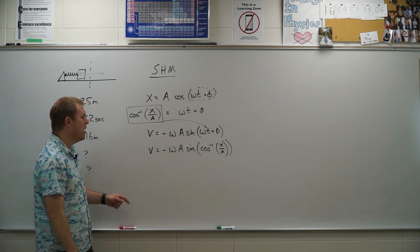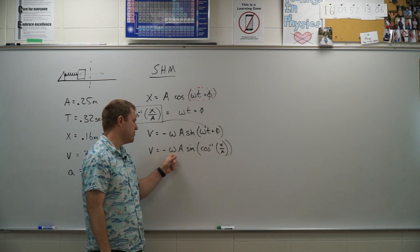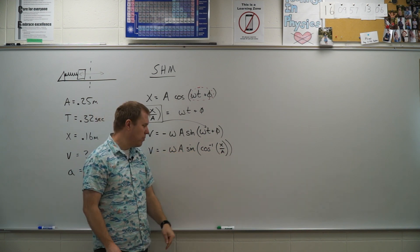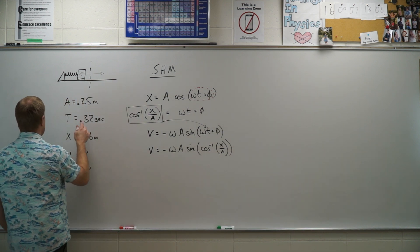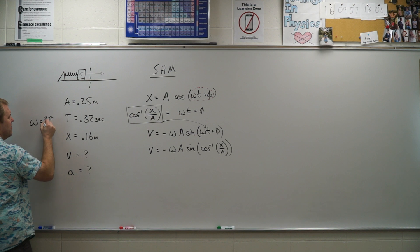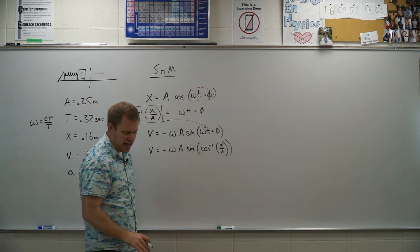All right, so a couple other things here. We know the x, it's 0.16. We know the A, it's 0.25. The omega right now we're a little shy on, but they did give me the period. So I know that omega is going to be 2 pi divided by the period. So I should be able to plug that information in there.